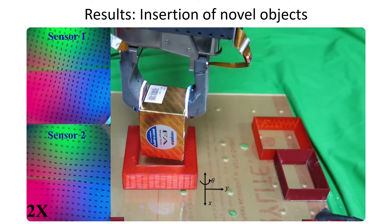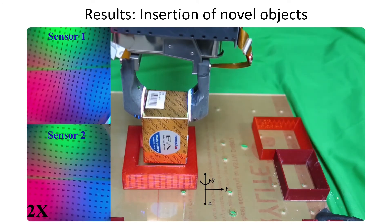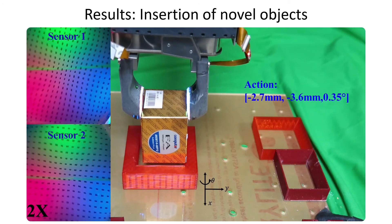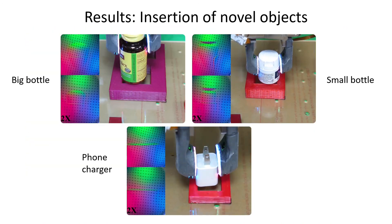The tactile RL policy can generalize well with novel objects. Here is an example of the performance with an object with similar shape but different texture and stiffness, and the other three novel objects.